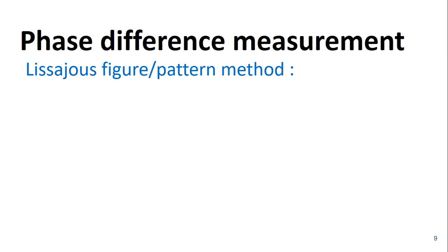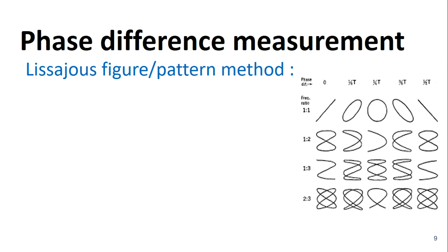Phase difference measurement can also be done using the Lissajous figure method. The Lissajous figure is the pattern which is displayed on the screen of a CRO when sinusoidal signals are applied to both the horizontal and vertical deflection plates of the CRO. These patterns will vary based on the amplitudes, frequencies and phase differences of the sinusoidal signals applied to the deflection plates.